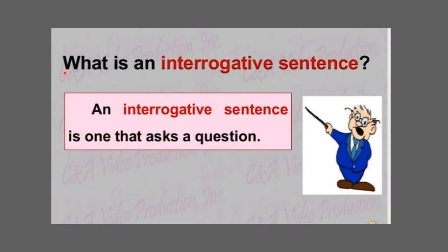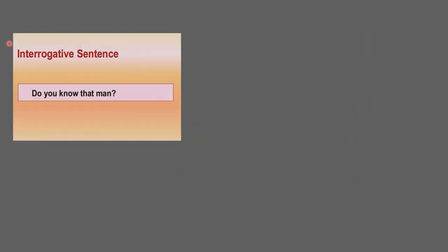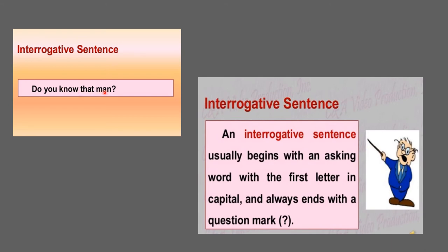What is an interrogative sentence? An interrogative sentence is one that asks a question. Example: 'Do you know that man?' An interrogative sentence usually begins with a question word or asking word with a capital letter, and it always ends with a question mark.